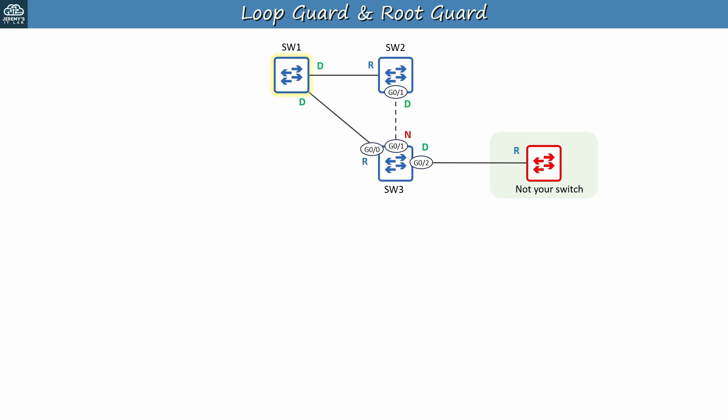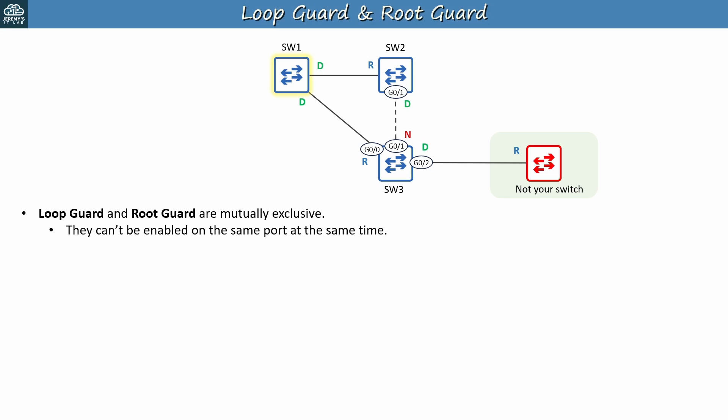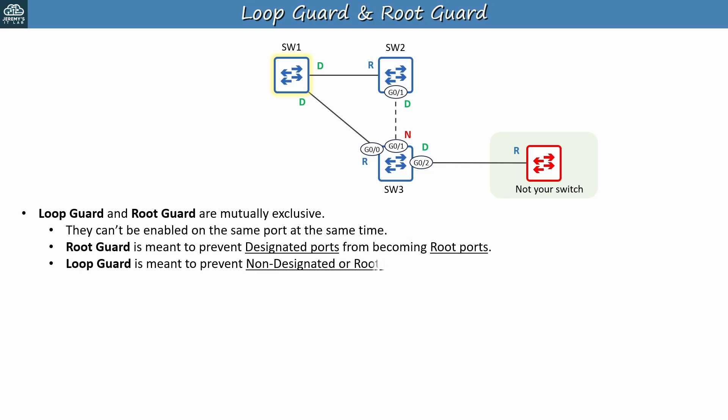Before we wrap up this video, let me point out something about Loop Guard and Root Guard. These two features are mutually exclusive — they can't be enabled on the same port at the same time, because they basically serve opposite purposes. Root Guard is meant to prevent designated ports from becoming root ports: if a Root Guard-enabled designated port starts receiving superior BPDUs, it will be blocked. Loop Guard is meant to prevent non-designated or root ports from becoming designated ports: if a Loop Guard-enabled port stops receiving BPDUs, it will be blocked. So just remember that you can't enable both on an interface at the same time.